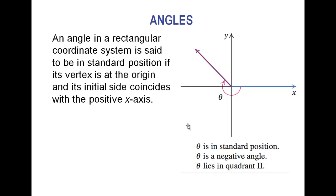We usually see angles on the x-y axis, on the coordinate plane. In that case, our standard position or initial side is always on the x-axis in the positive direction. This piece here is your initial side, and then this is going to be your terminal side, and the angle is the measurement that got you there depending on whether you went clockwise or counterclockwise.